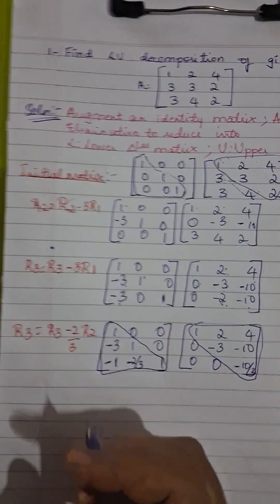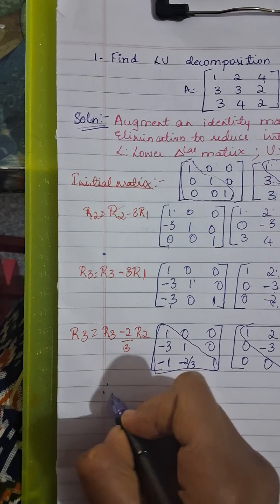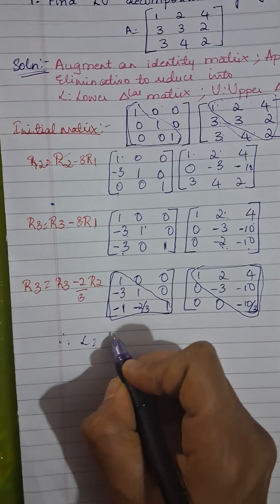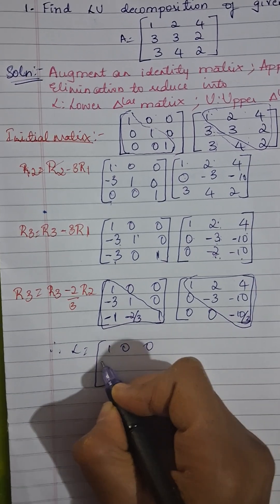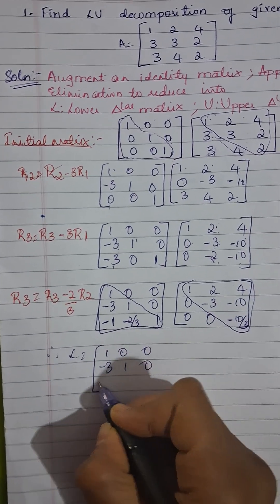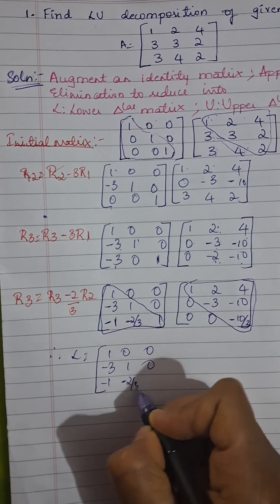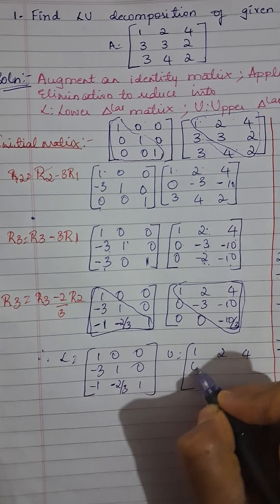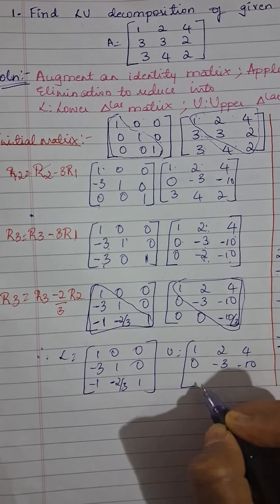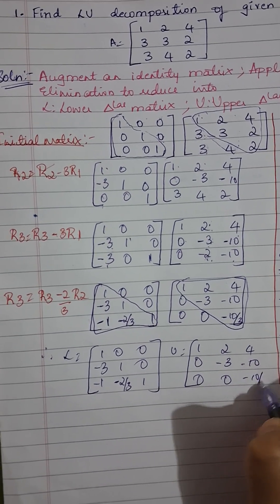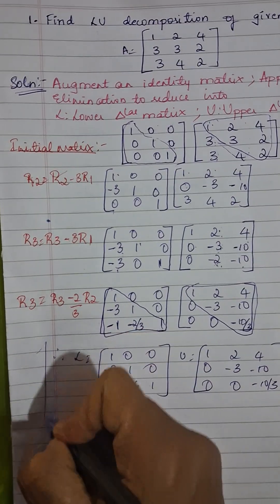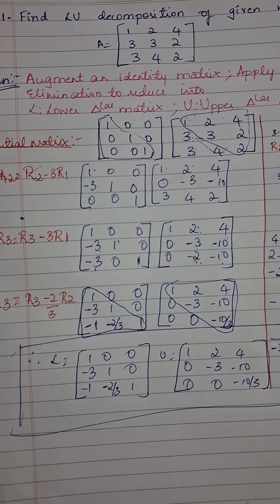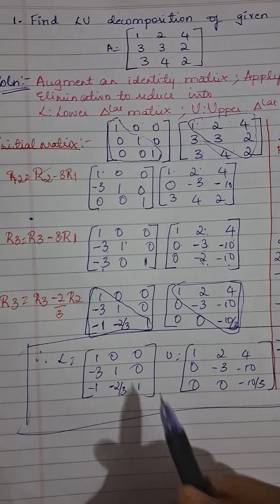Therefore, we can conclude that the lower triangular matrix L equals: row 1: [1, 0, 0]; row 2: [−3, 1, 0]; row 3: [−3, −2/3, 1]. The upper triangular matrix U equals: row 1: [1, 2, 4]; row 2: [0, −3, −10]; row 3: [0, 0, −10/3]. We have successfully decomposed the matrix using LU decomposition into these two matrices.